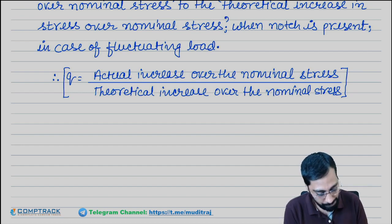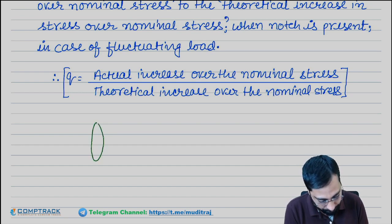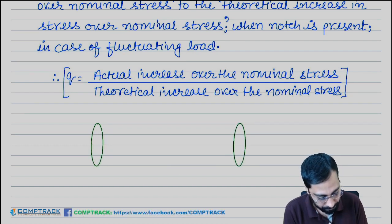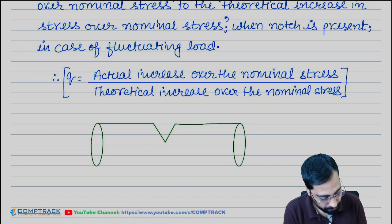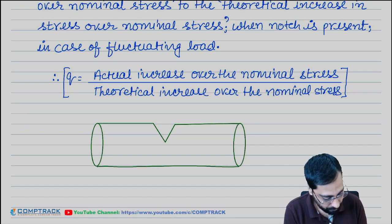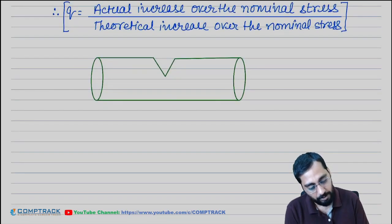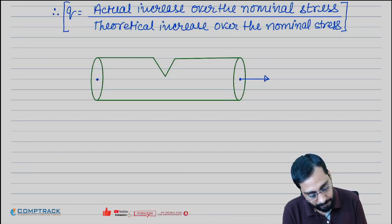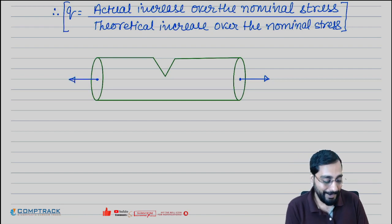Look here. Let's say this is the member, and this is the notch. In this member, load will be applied like this, on both sides.